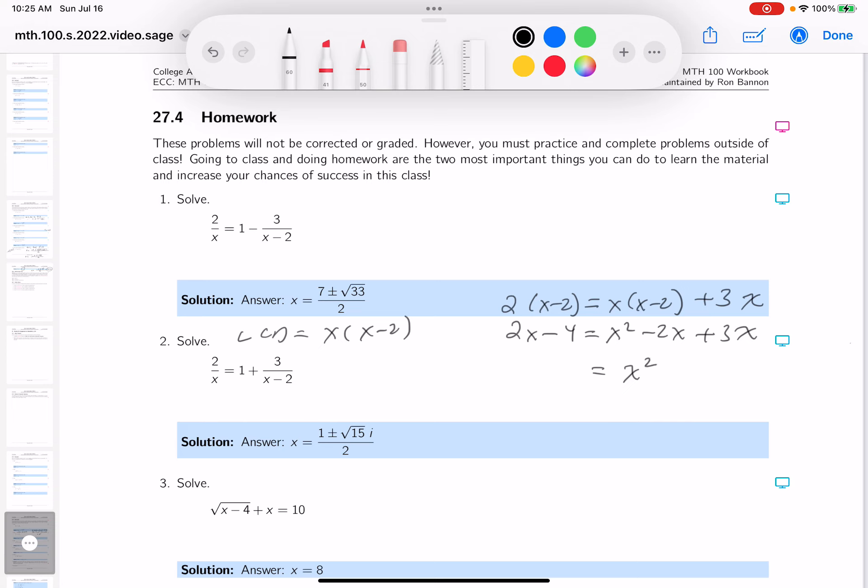x squared, put a zero there, I'm going to subtract 2x from both sides. Let's see, minus 2x plus 3x is x, and minus 2x is just minus x. That's not so bad. And then plus four.